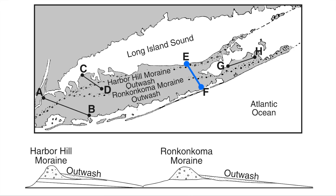If we were to look at line EF here from the side as a profile, you would have this first moraine, and then notice this term outwash, which is just some of the material that's been washed out by melting water. Then we have a second period of glaciation that resulted in the Ronconca moraine.